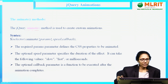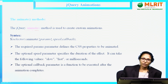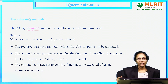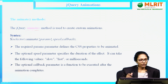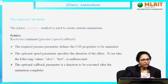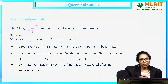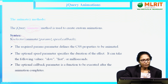Coming to the syntax of this animate method, we know in jQuery to use any action, first we need to select the element. The syntax is dollar of selector — on a particular selected element we are going to apply the action. The action we are applying here is animate, and animate will take parameters within the parenthesis: params, speed, and callback.